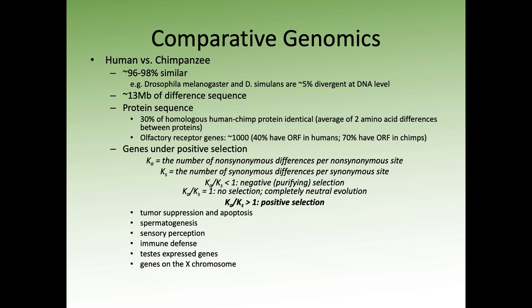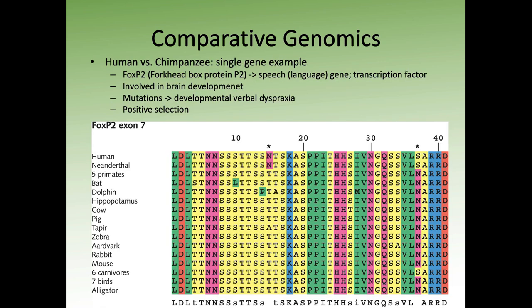When we look at genes in human-chimpanzee comparisons for positive selection, the genes that tend to show it are associated with things like tumor suppression and apoptosis, spermatogenesis, sensory perception, immune defense, genes expressed in the testis, and genes on the X chromosome. These are some of the ways we can identify what could be contributing to differences between humans and chimpanzees.